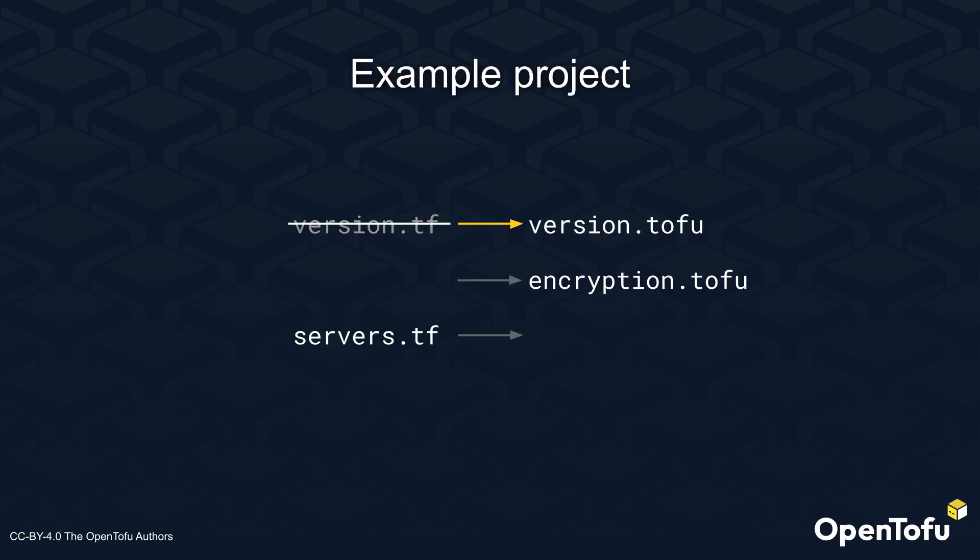Looking at a small example project, you may want to create a version.tf file with the Terraform version requirement and override it with a version.tofu file requiring the correct OpenTofu version. You may also want to create an encryption.tofu file without a corresponding encryption.tf file to hold your state encryption configuration, since Terraform doesn't support state encryption. Your common code for both OpenTofu and Terraform can live in servers.tf. OpenTofu will read the version.tofu, encryption.tofu, and servers.tf files, and ignore the version.tf file.